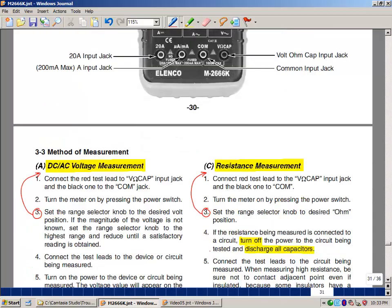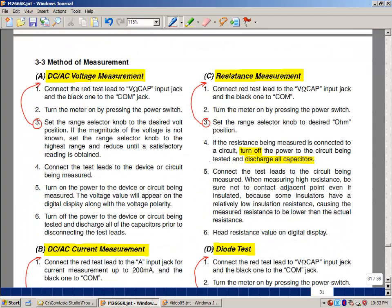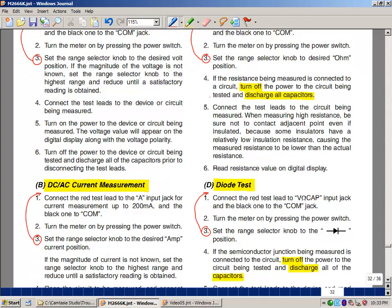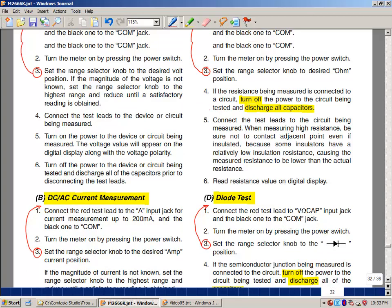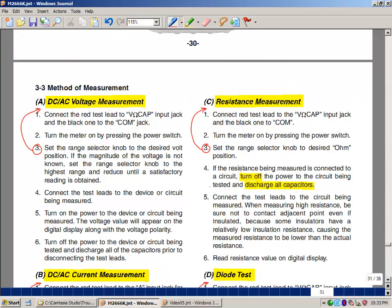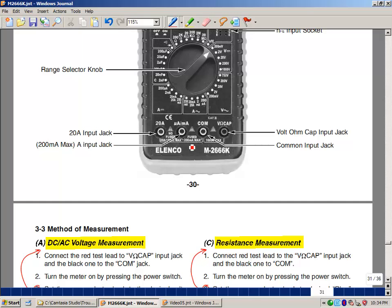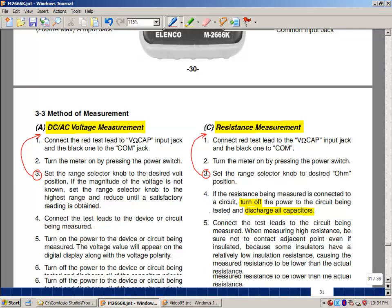The same thing for the current here. I like to put the number three here as number one just setting it to the amp position before you do anything else. To take current measurements we're using different terminals here. This is our negative terminal and then if we're on a microamp milliamp scale we're going to use this jack and then if we're on a 20 amp scale we're going to use this one. You can follow the procedure here. We've done something like this previously in the testing of the meter.